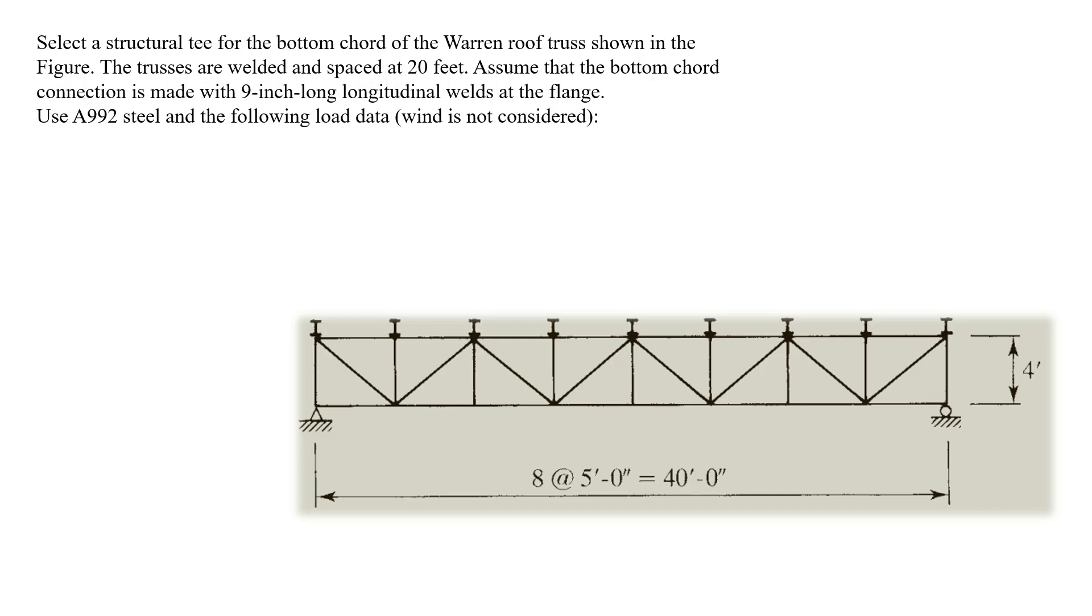The trusses are welded and spaced at 20 feet. The bottom chord connection is made with 9 inch long longitudinal welds at the flange. Use A992 steel and the following loads: dead load coming from the roof, metal deck, insulation, weight of the purlins, and snow load.